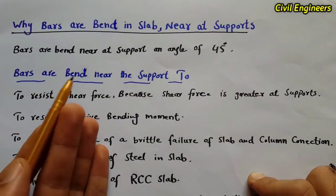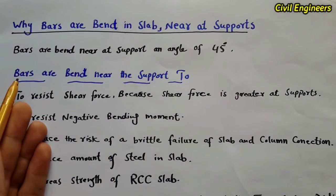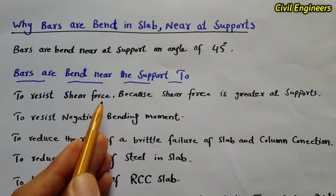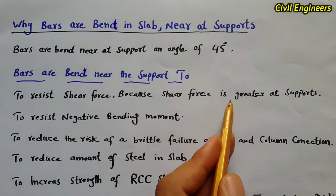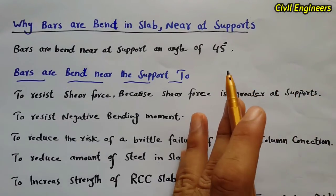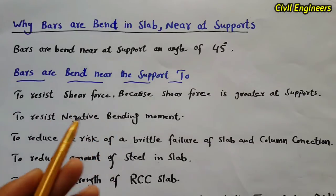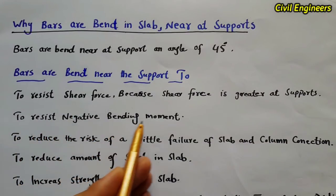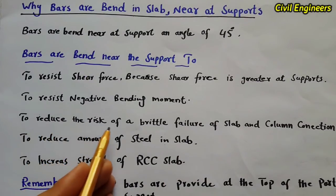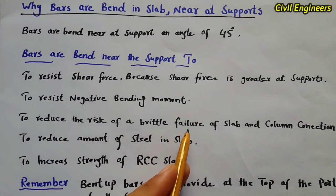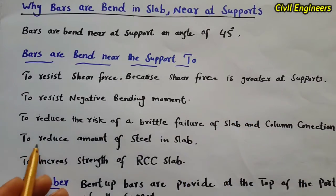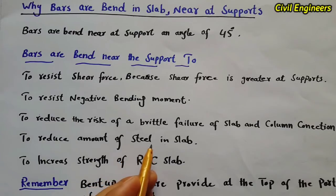Here are some points about why we bend the bar near at the support. First, to resist shear force, because shear force is greater at supports, therefore we provide a bent-up bar near at the support. Also, to resist the negative bending moment. Another point is to reduce the risk of brittle failure of the slab and column connection.